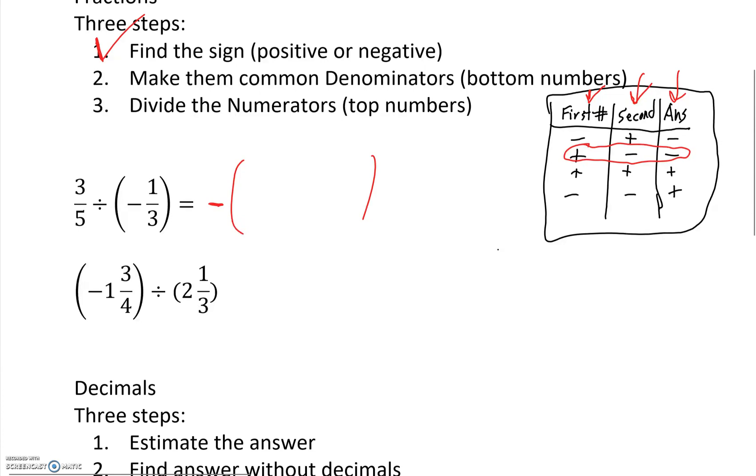Step two: make them common denominators. So this is the bottom number. What we do here is you multiply it by both the top and the bottom on the other side, and then you take the bottom number on the other side, multiply it by both the top and the bottom on that side.